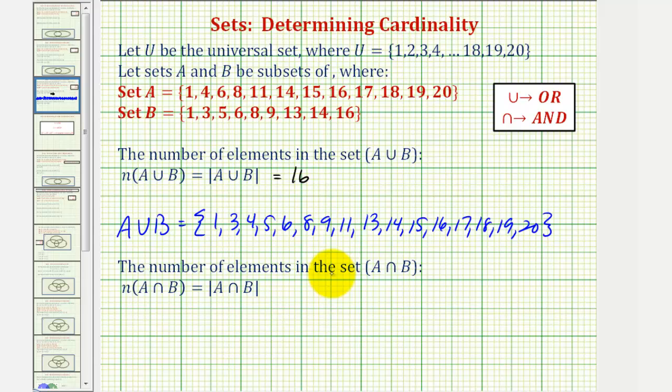Now we want to count the number of elements in the set A intersect B, which would be the elements that are in A and also in B. So let's first find A intersect B. So we're looking for the elements in both A and B. Notice how one, six, eight, fourteen, and sixteen are in both A and B.